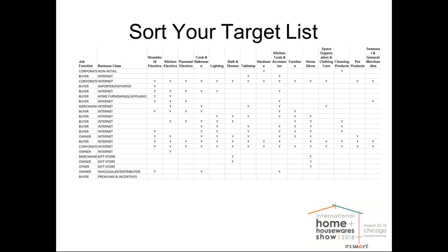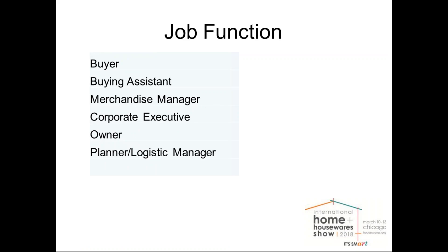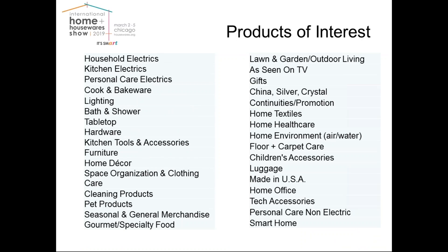Once you sort, here is a listing of your product of interest on the very right-hand side. Any of the attendees who have chosen a product of interest code will have a Y in that column. We have approximately 21 retail classes shown on the screen right now that you are able to sort by. You can also sort by job function, and we have about 32 products of interest codes that buyers have listed for what products they are interested in purchasing.